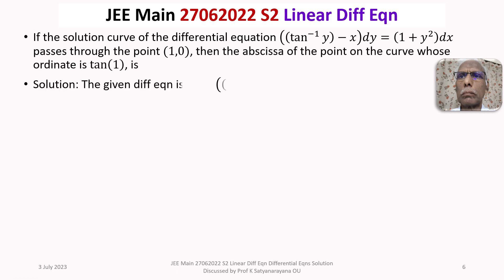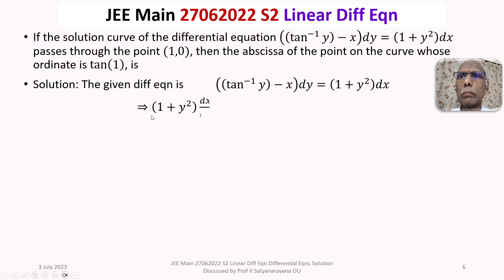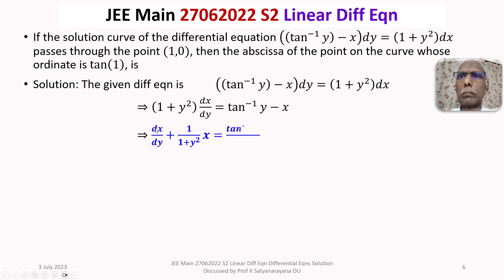Let us now discuss the solution in detail. This equation can be written as (1 plus y squared) dx/dy equals tan inverse y minus x. Bringing minus x to the left-hand side and dividing throughout by (1 plus y squared), it becomes dx/dy plus (1/(1 plus y squared)) x equals tan inverse y divided by (1 plus y squared).